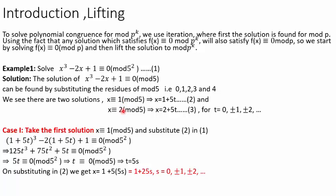How did we get that? We looked for the residues of mod 5. The residues will be 1, 2, 3, and 4. We substitute and see which ones satisfy this congruence. So, x ≡ 1 mod 5 and x ≡ 2 mod 5 are the two solutions. We can always write them as x = 1 + 5t and x = 2 + 5t, where t takes different values.